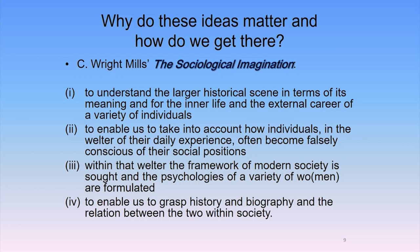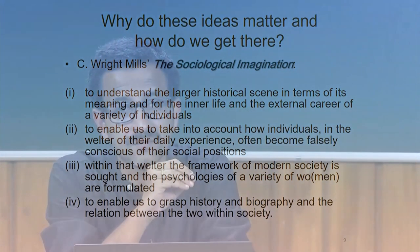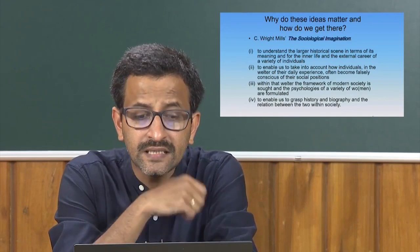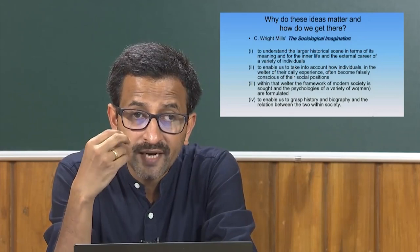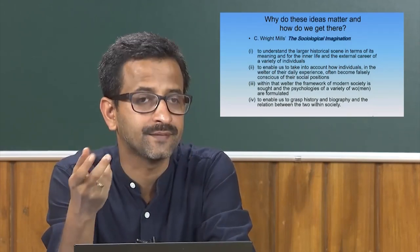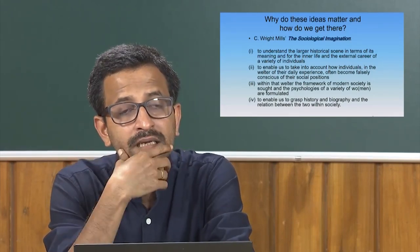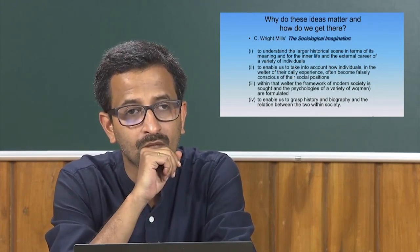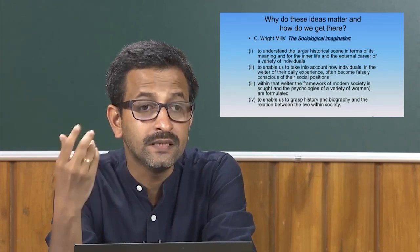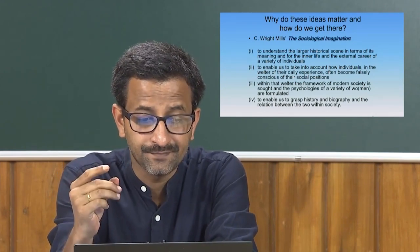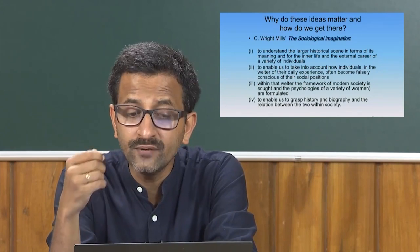Let us discuss each of the four components of the sociological imagination one by one. First: to understand the larger historical scene — I must try to look at that mode of thinking which Mills called the sociological imagination, in terms of its historical contemporaneity. Second: it enables us to take into account how individuals in the welter of their daily experiences often become falsely conscious of their social positions. For example, if my income increases, does it alter my class situation? Many people say yes, but classes are constituted not by income alone.